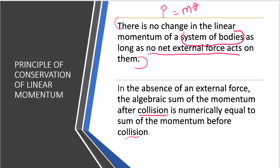The second point is: in the whole system, no external force should be applied. There is no net external force acting on the system. So, when both conditions are met — system of bodies present and no net external force — then there is no change in linear momentum. In other words, in the absence of external force, the algebraic sum of momentum after collision is numerically equal to the sum of momentum before collision.